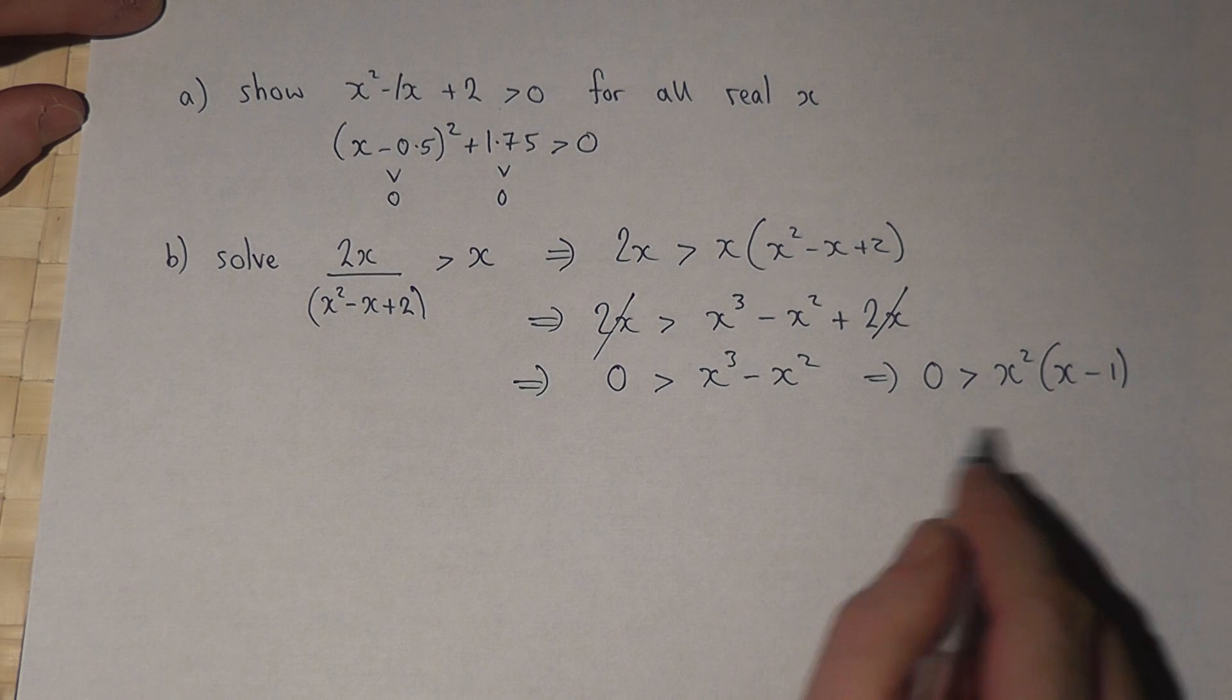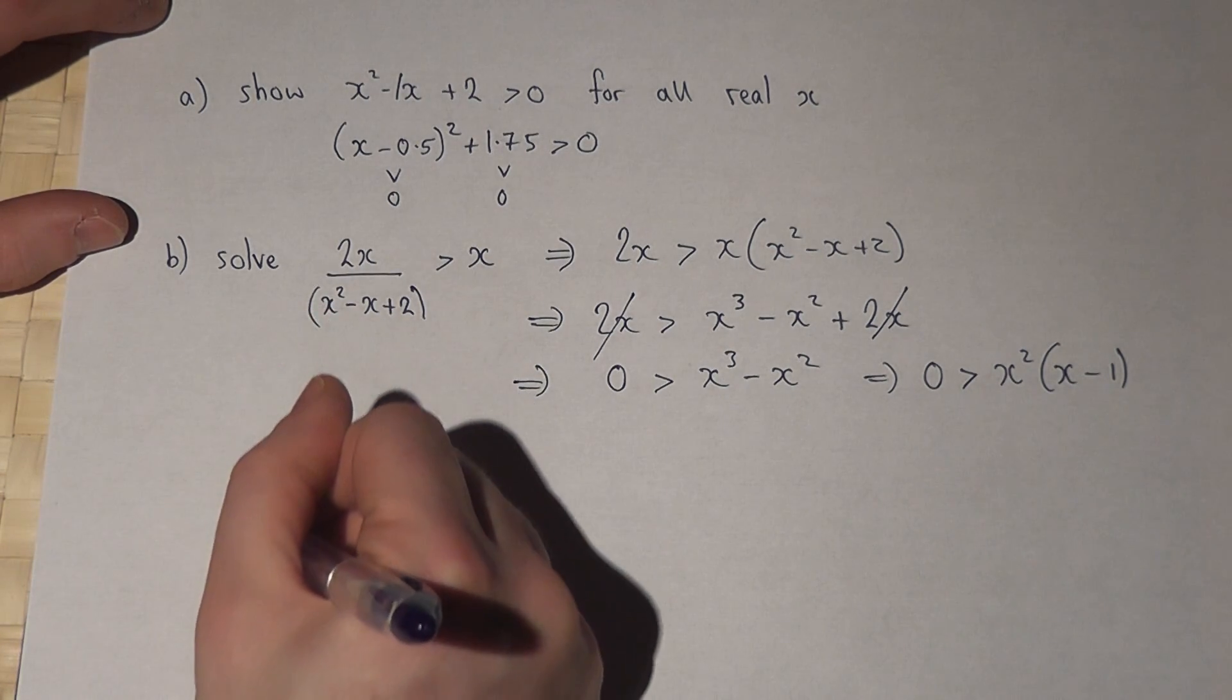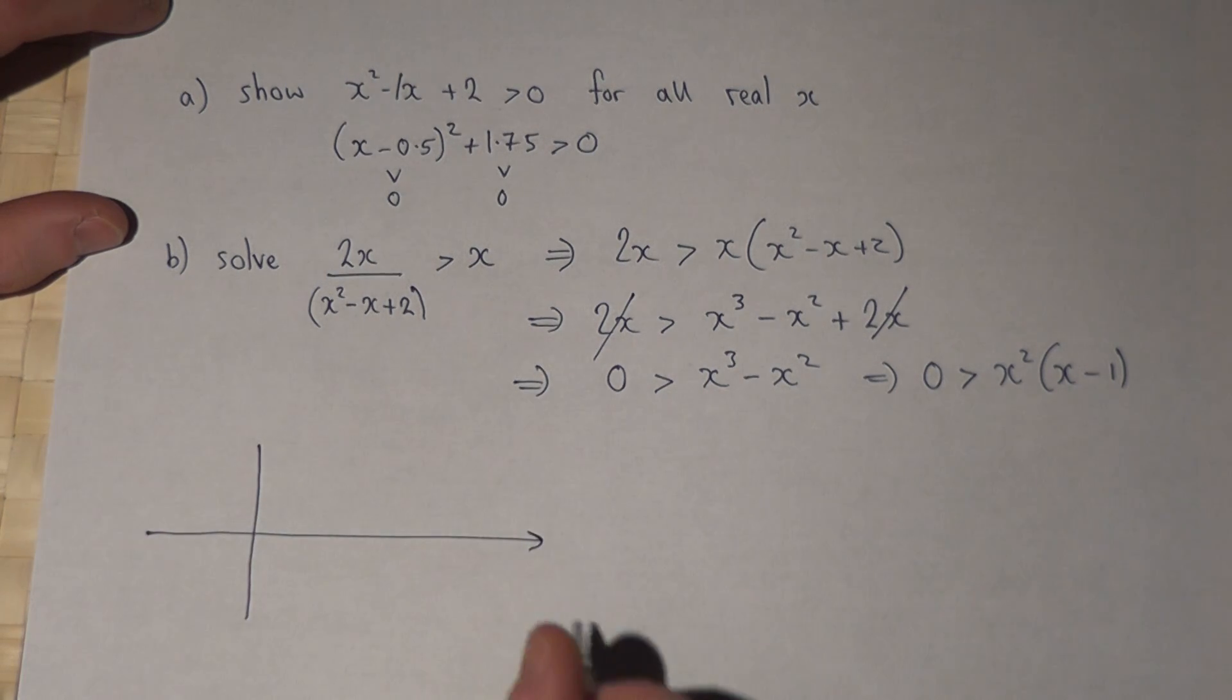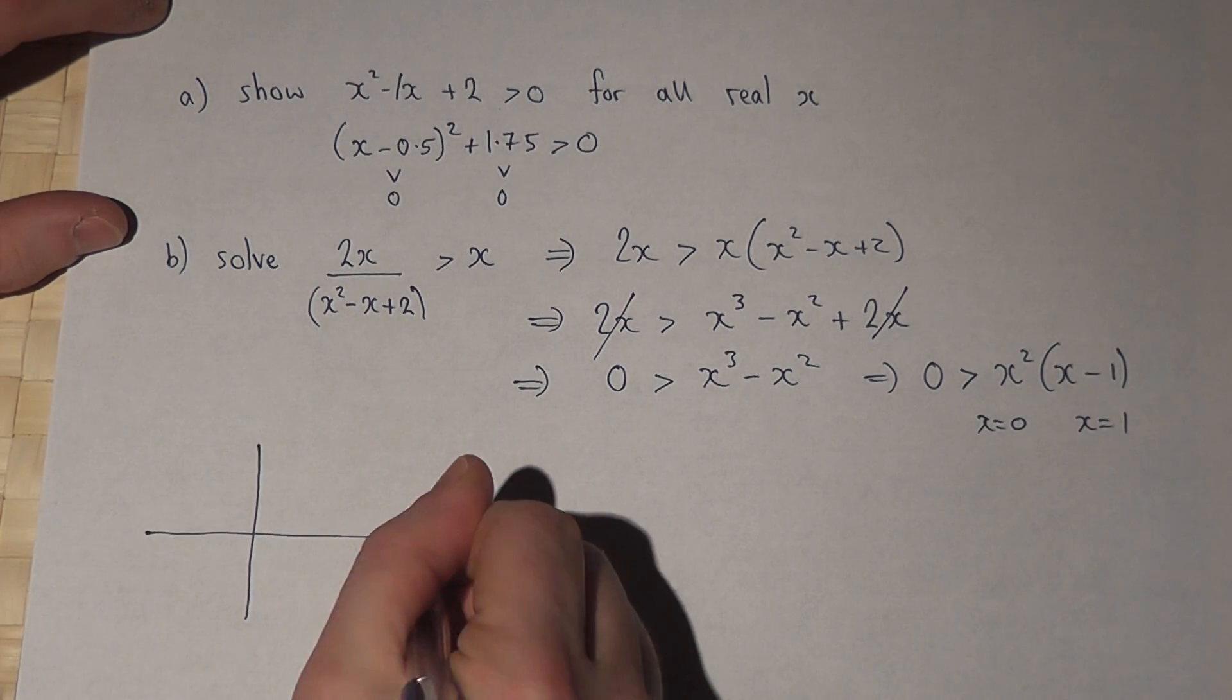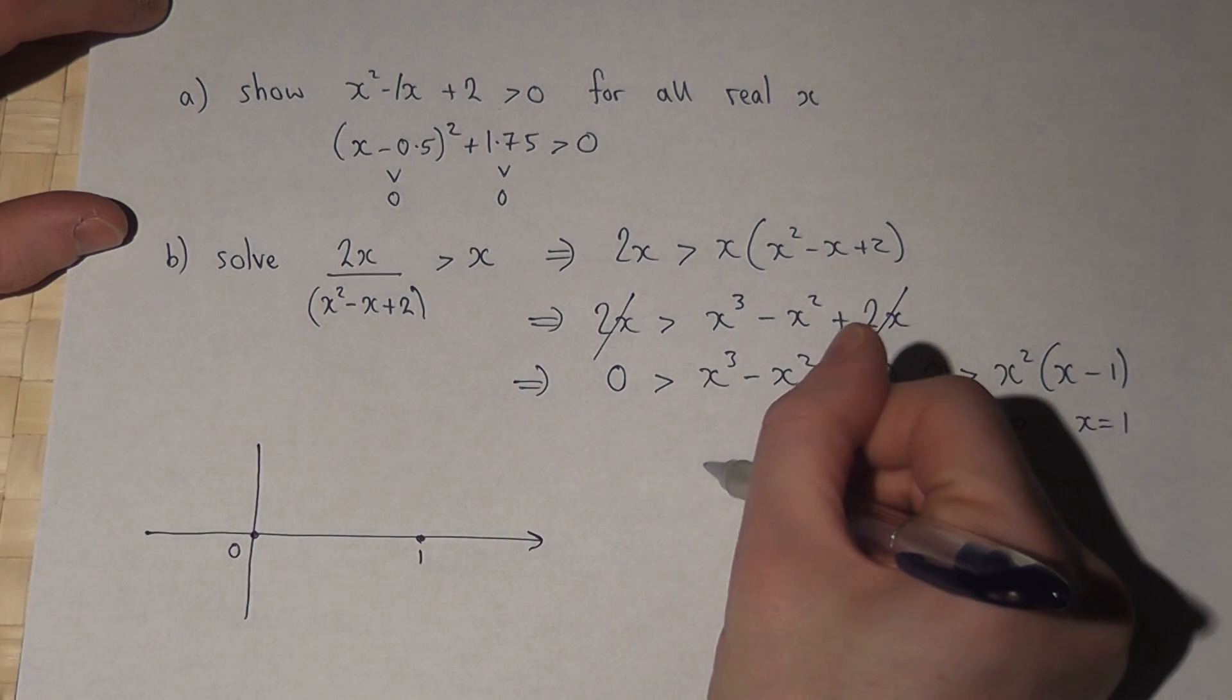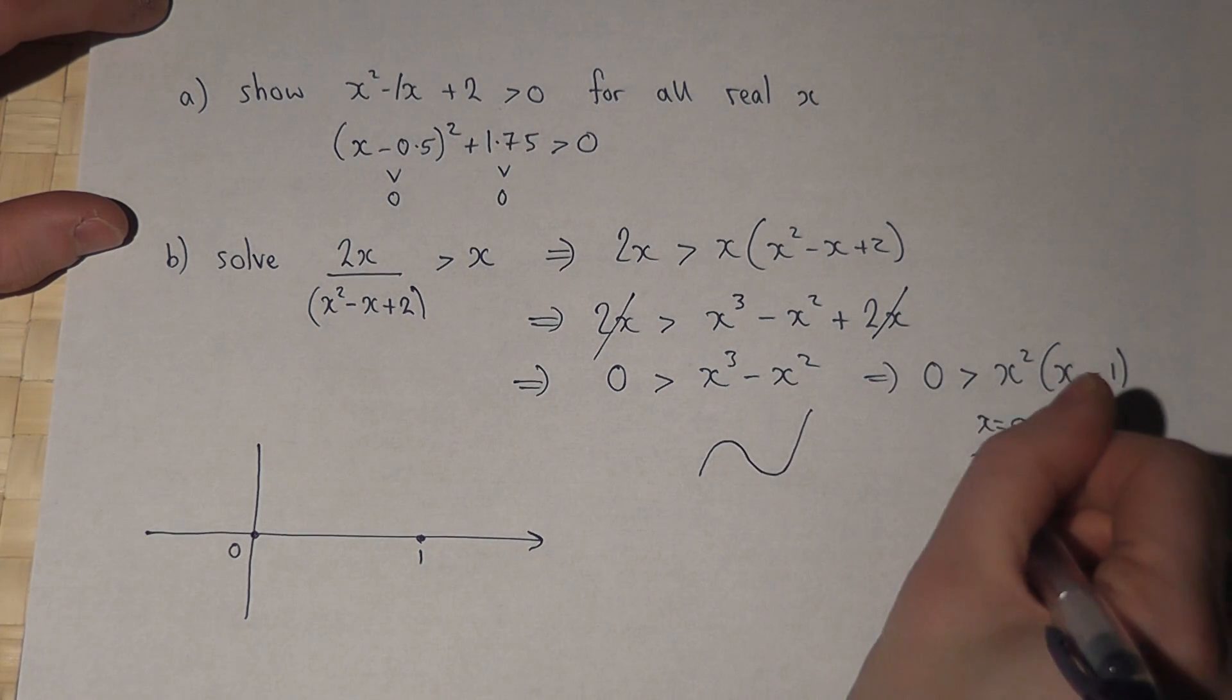So I must solve this inequality. To do this, I consider the graph. We know that there's a root at x equals 0 and x equals 1. So there's my 1 and there's my 0. Now it's a cubic graph, which has the typical S shape, but there's a repeated root at x equals 0.